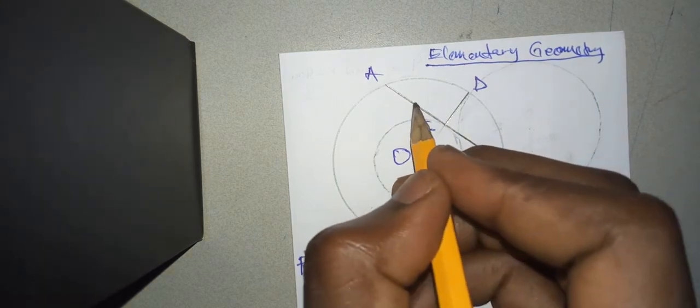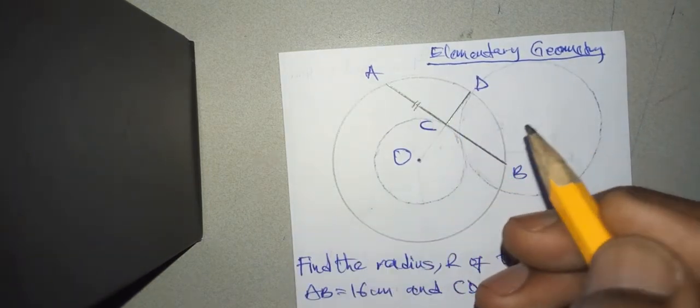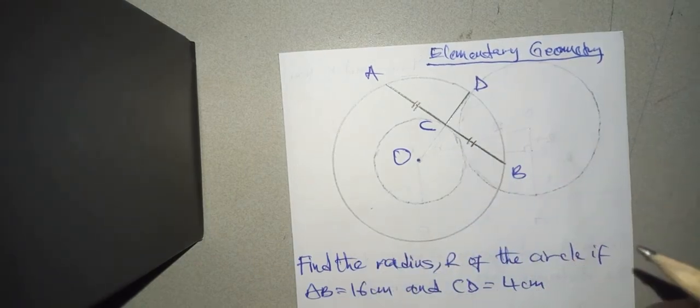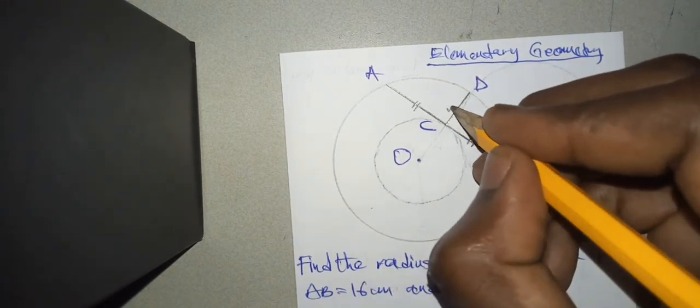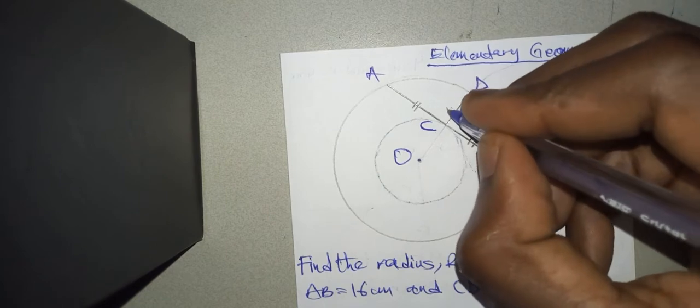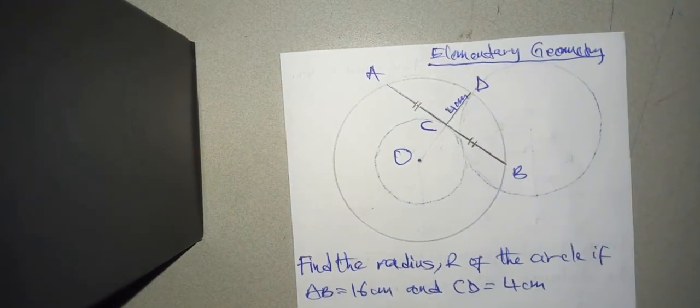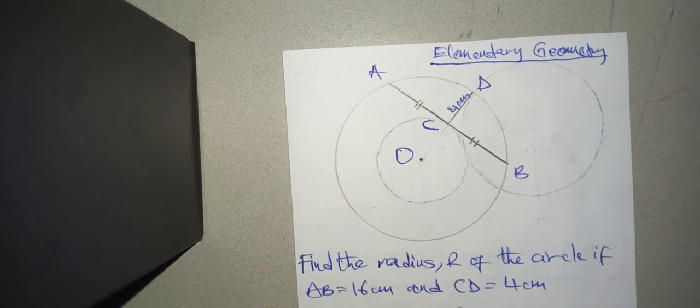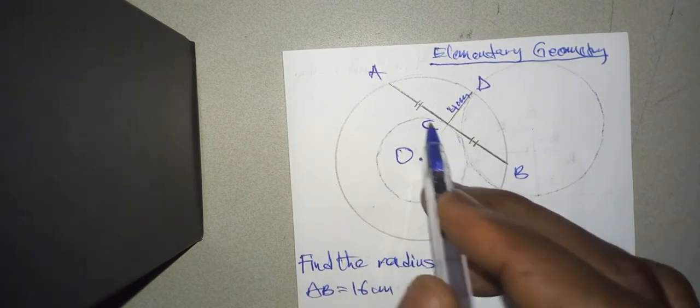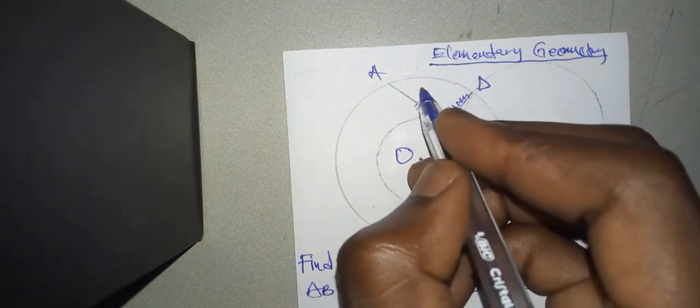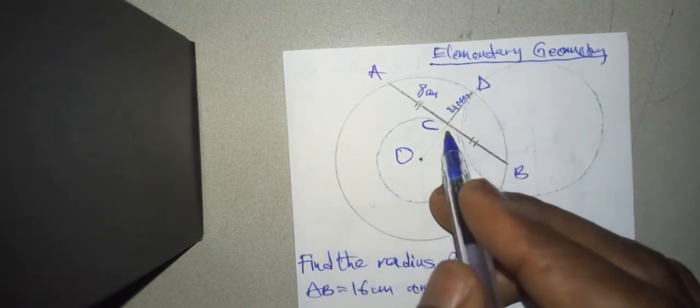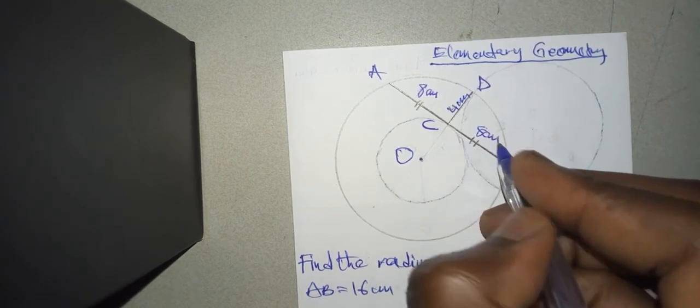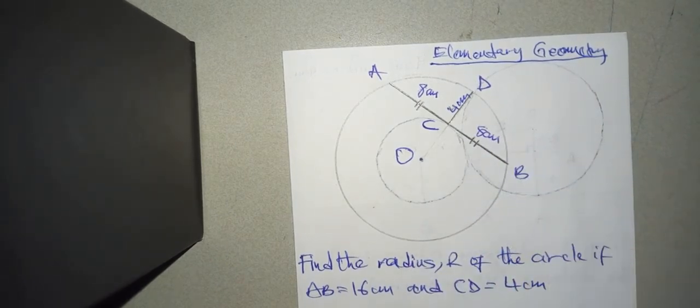Now if AB is 16 centimeters, then AC, which is half of AB, will be 8 centimeters, and CB, which is the other half, will also be 8 centimeters. Great.